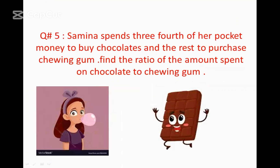Samina spends three-fourths of her pocket money to buy chocolates and the rest to purchase Twingham. Find the ratio of the amount spent on chocolate to Twingham.